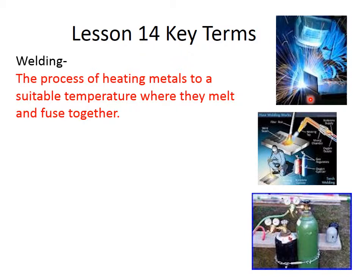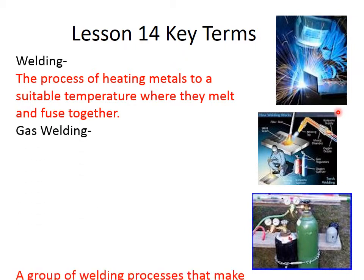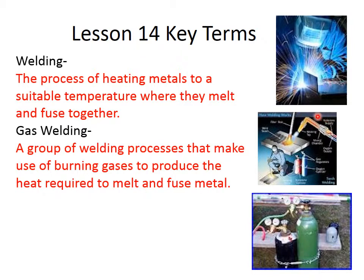We have one MIG welder in our room, four arc welders, and five gas welding stations. The arc welding and MIG welding stations use the same type of helmet. Gas welding uses a torch — you apply heat through the torch. On MIG and arc welding, heat is provided through electricity; on gas welding it is provided through a flame. We use an oxy-acetylene system to provide heat to melt the two pieces of metal together.